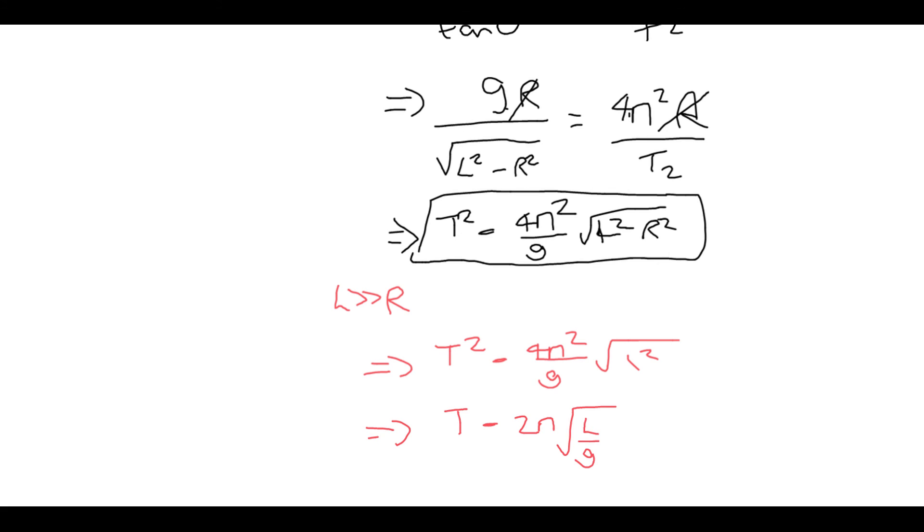So when we have a very long conical pendulum where the length is much greater than radius, what we can see happens is that it just becomes like a pendulum. So we can just model it as a pendulum system. But we can see where that's not the case.